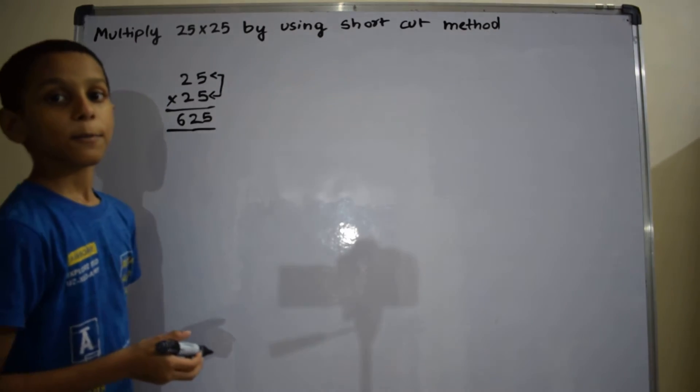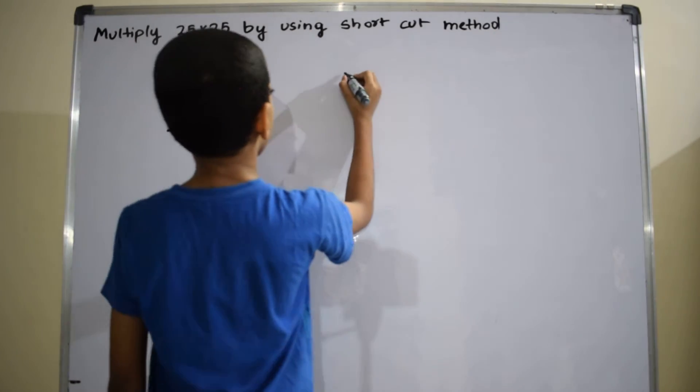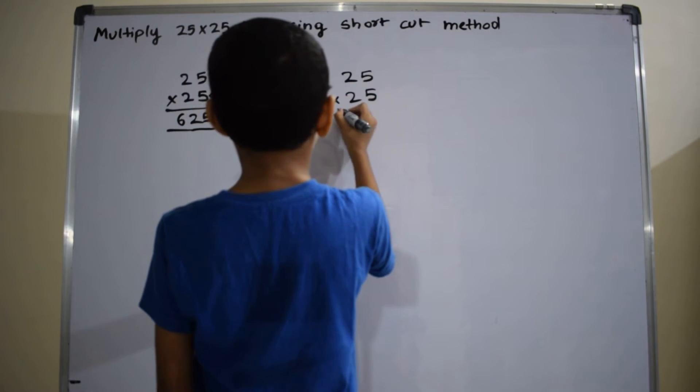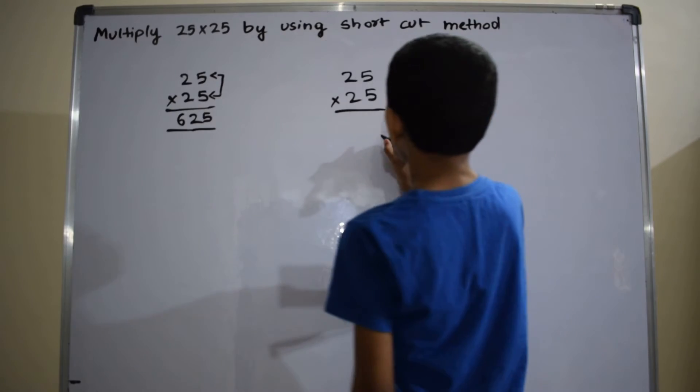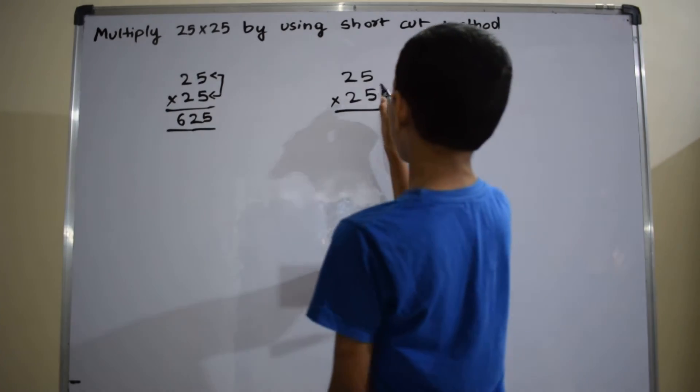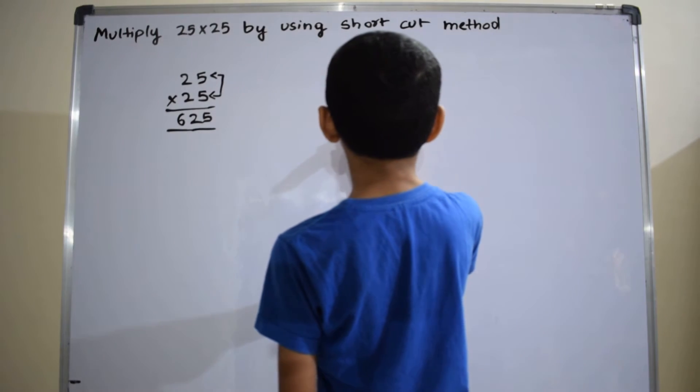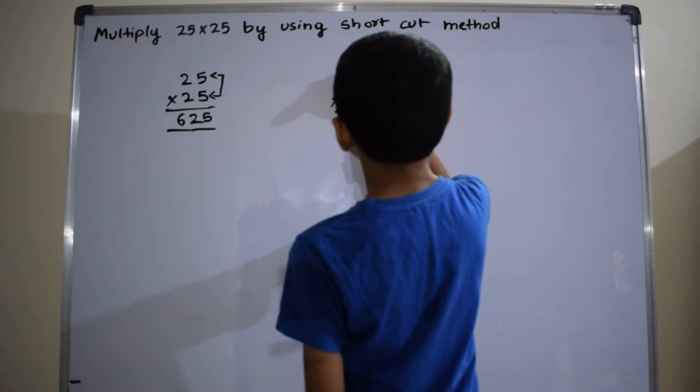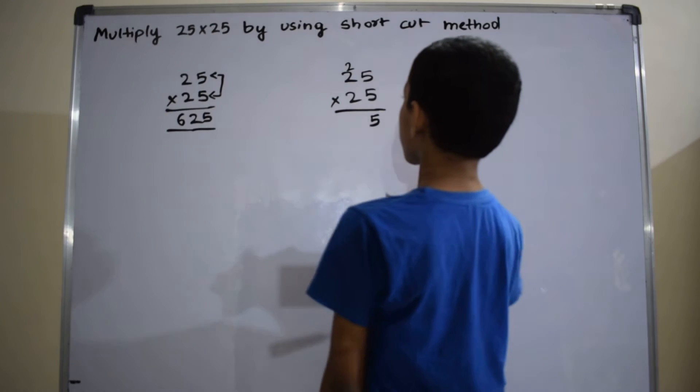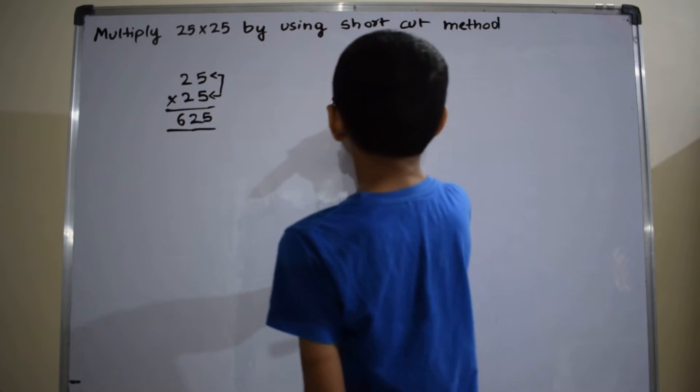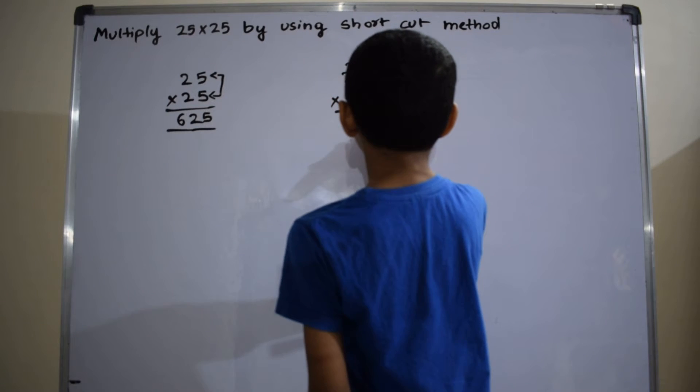Let's verify it manually. 25 into 25. Now we have to multiply 25 with 5. So 5 into 5 equals 25, write 5. 5 into 2 equals to 10. And add it with 2. 10 plus 2 equals to 12. Put here plus.